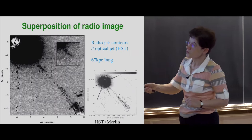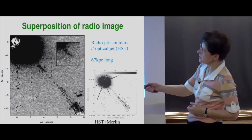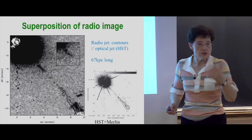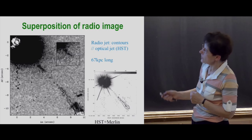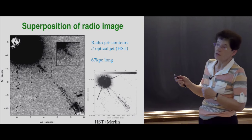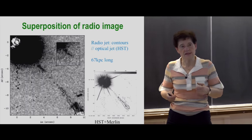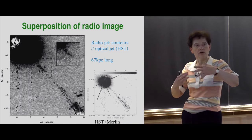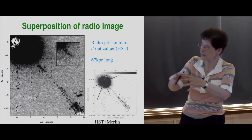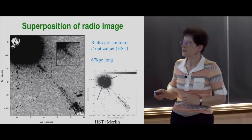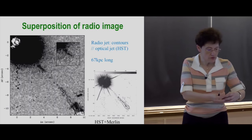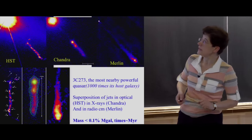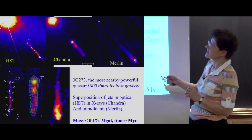This particular quasar, 3C273, one of the brightest quasars in the neighborhood, also has a jet visible in optical wavelengths, and you also see the radio jet in contours — radio emission at centimeter wavelength. It has a large length: 65 kiloparsecs, while a galaxy is about 10 kiloparsecs, with 1 parsec being 3 light years. The quasar is able to expel jets into intergalactic space. You can see this kind of jet in several wavelengths — in HST optical, and now we can resolve it, whereas in 1963 it was not resolved.